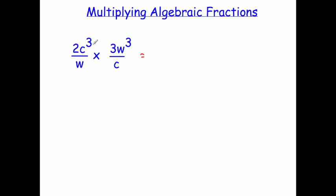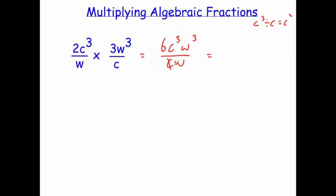In this example we've got 2C cubed over W times 3W cubed over C. Multiplying the numerators, 2 times 3 is 6, and we get C cubed times W cubed on top. On the denominator, W times C gives CW. Cancelling down: C cubed divided by C leaves C squared, and W cubed divided by W leaves W squared. So we've got 6C squared W squared.